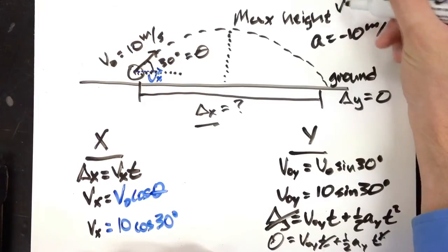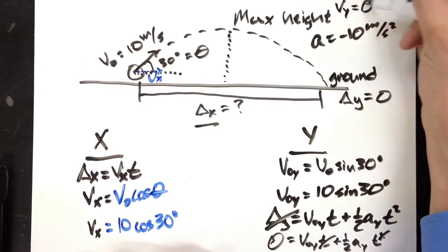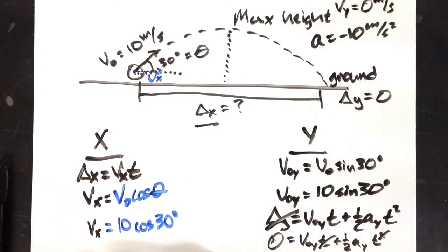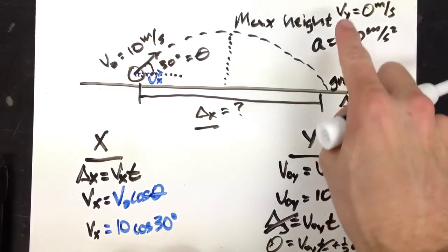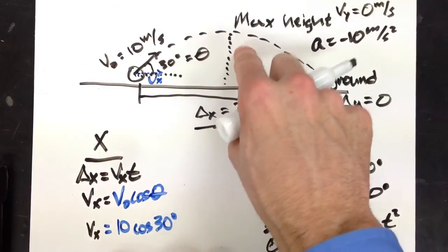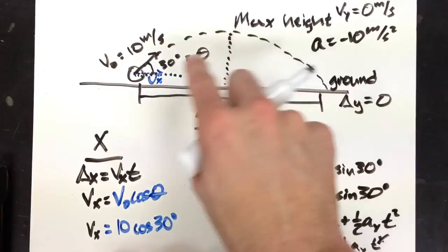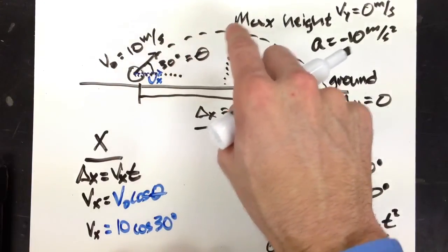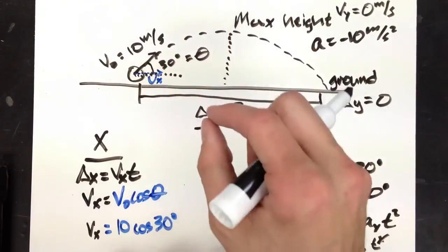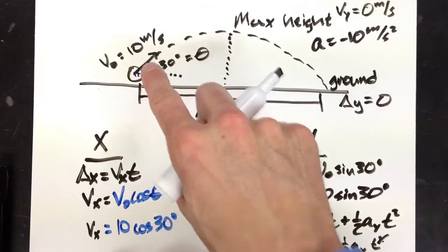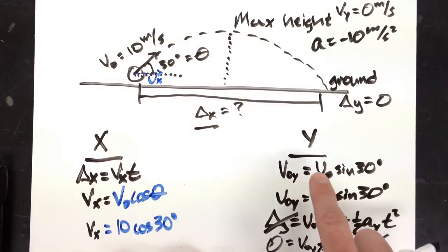Well, one thing we know about the max height, our vy is 0. Knowing that the velocity right there is 0, you could use kinematics and really any equation where you know v initial, it's v0y, which you can calculate.